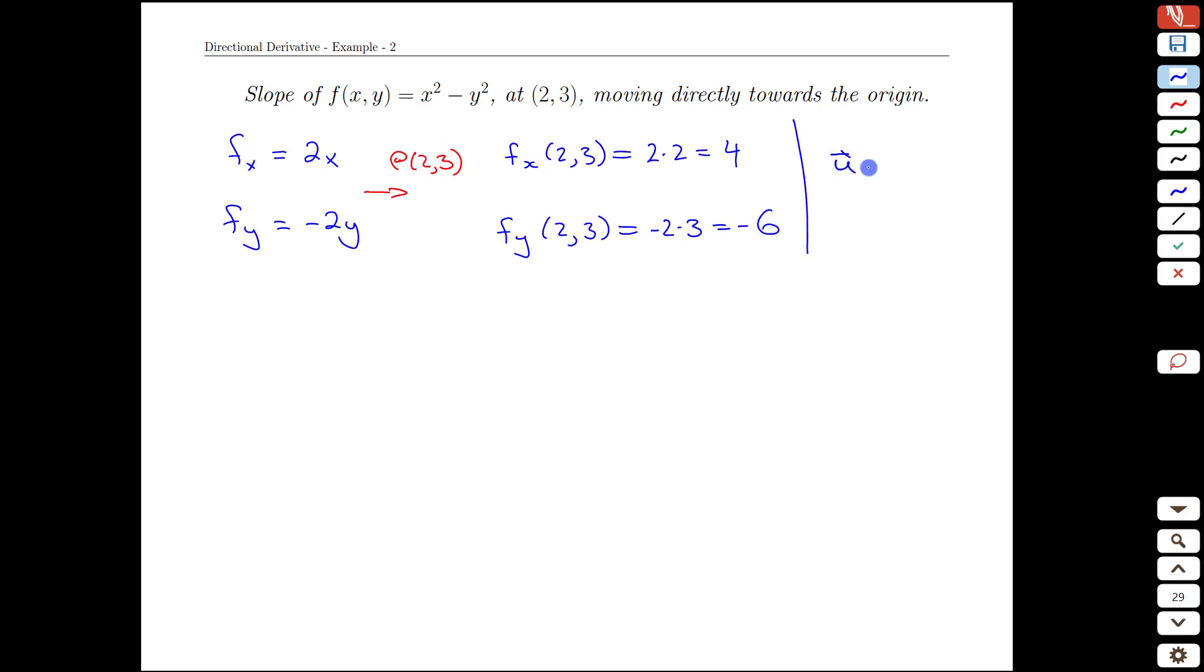We also have the other ingredient that we mentioned: 1/√13 times (-2, -3)—that's our vector, our direction that we're going to travel in. And then we can compute our slope in that direction.